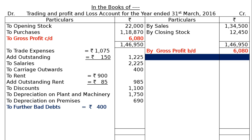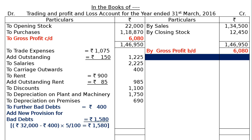The adjustment states: rupees 400 are to be written off as bad debts out of the debtors, and 5 percent is to be provided for doubtful debts. So further bad debts in the adjustment is rupees 400. New provision for bad debts: Debtors rupees 32,000 minus further bad debts rupees 400 equals rupees 31,600; 5 percent of rupees 31,600 gives new provision of rupees 1,580. The bad debts column in the debit side totals rupees 1,980.